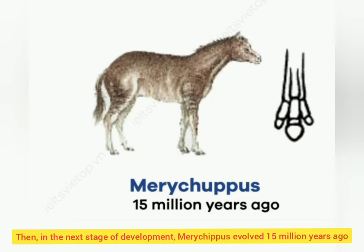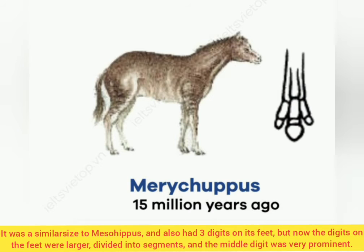Then, in the next stage of development, Merychippus evolved 15 million years ago. It was a similar size to Mesohippus and also had three digits on its feet, but now the digits were larger and the middle digits were very prominent.